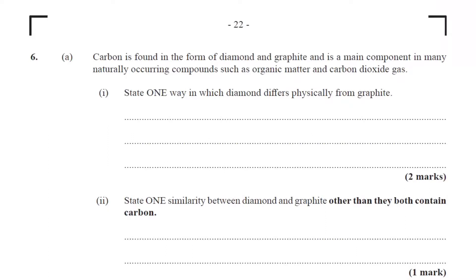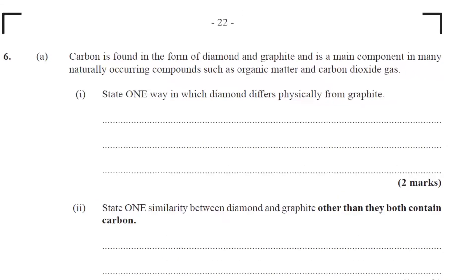Question 6, Part A. Carbon is found in the form of diamond and graphite and is a main component in many naturally occurring compounds, such as organic matter and carbon dioxide. State one way in which diamond differs physically from graphite. We should be thinking allotropes. So one way in which diamond is different from graphite — let's just get that down.